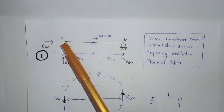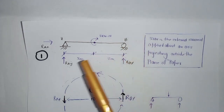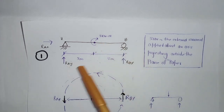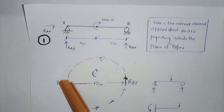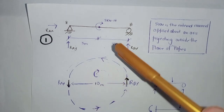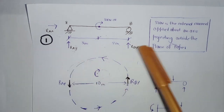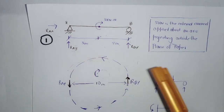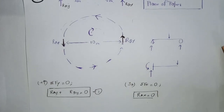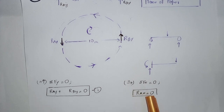RAX would be producing no moment at all, as it's passing through the point about which the moment is to be determined. So one of these two forces has to change its direction for the beam to remain in equilibrium. The combination of these two forces has to produce an anticlockwise moment to balance the clockwise external moment. For now, we'll assume both forces are acting upward and apply the first equation of equilibrium — all forces in the horizontal direction equal zero. As there are no external horizontal forces, RAX equals zero.